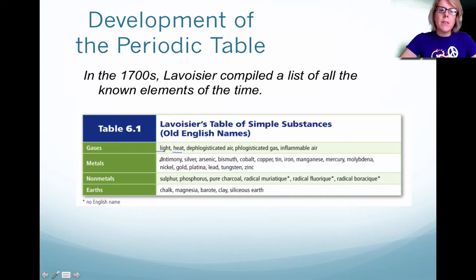However, his antimony is correct. His silver, cobalt, copper, those are all elements. And his nonmetals here, sulfur and phosphorus, are correct. Some of these are French-named elements that really aren't elements.